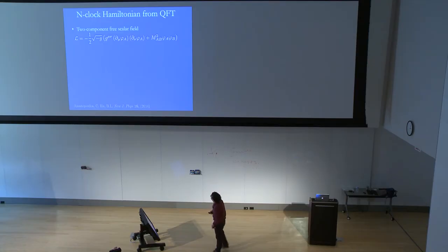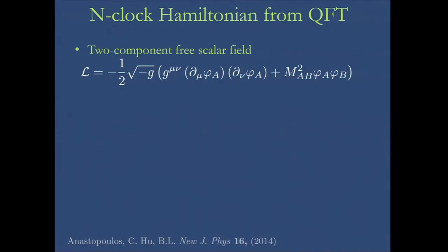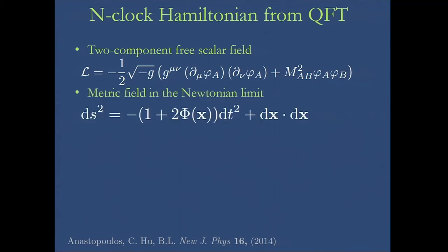So a bit of formalism. We can derive this Hamiltonian that we use to analyze the coherence of the clock due to the gravitational interaction with the rest of them. From a field theory point of view, we take two scalar fields. One represents the clock being in a ground state, the other represents the clock being in the high energy state, and then we allow for superpositions between the two. They interact with gravity, and we take the metric field in a Newtonian limit of gravity, and then we quantize things.